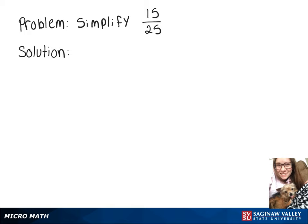In this video we want to simplify 15 over 25, and to do that we want to think of a common factor between those two numbers. So we're going to rewrite 15 over 25 as 5 times 3 over 5 times 5, since they have that common factor of 5.